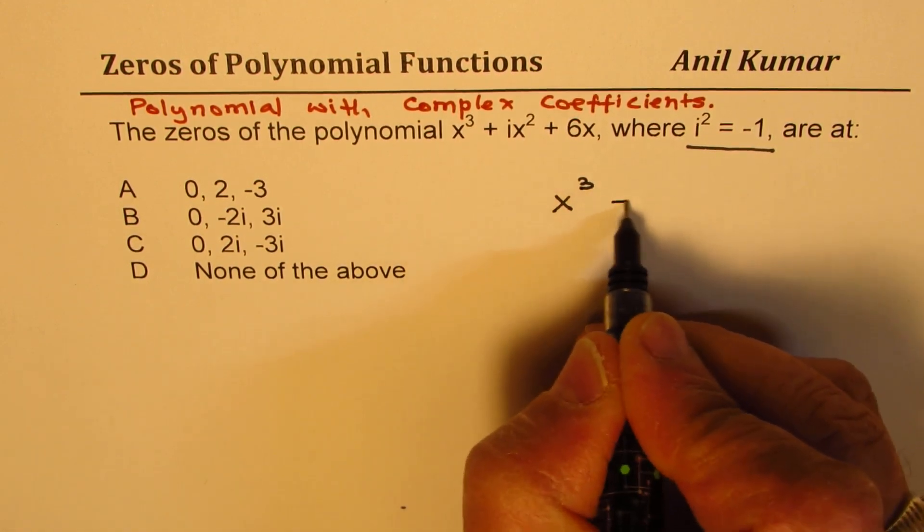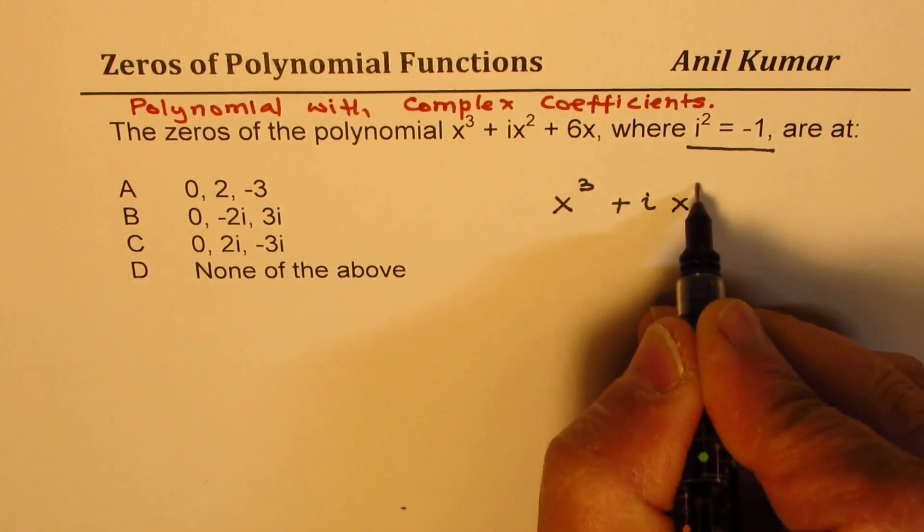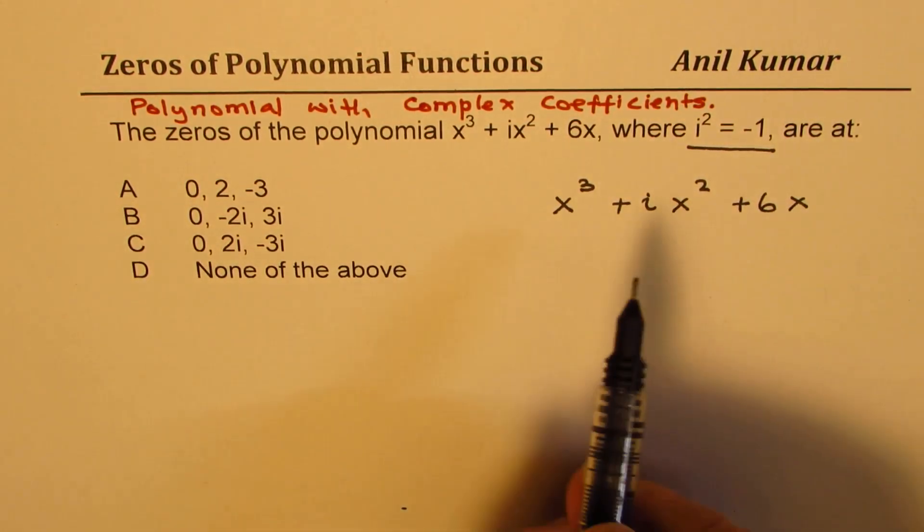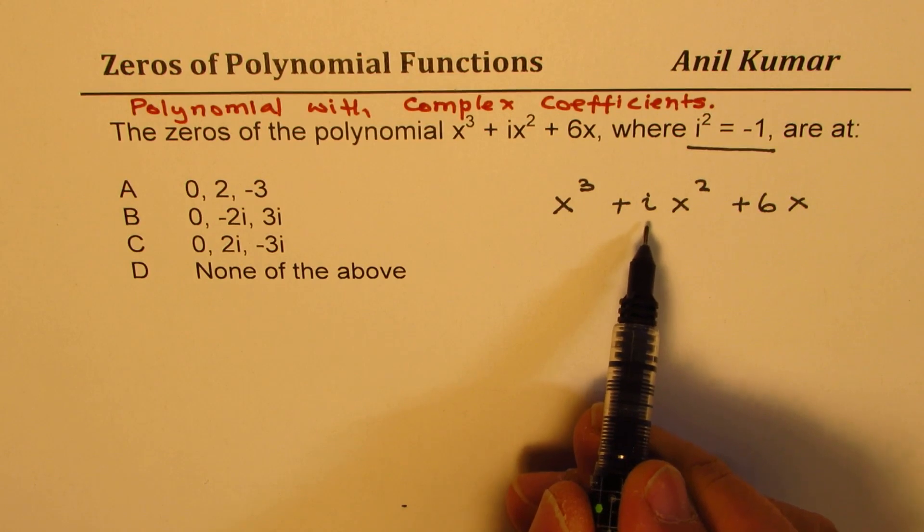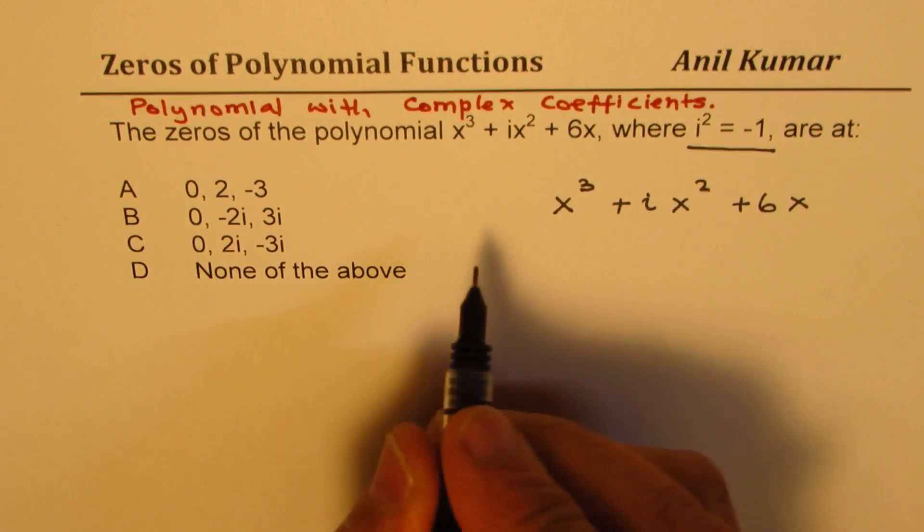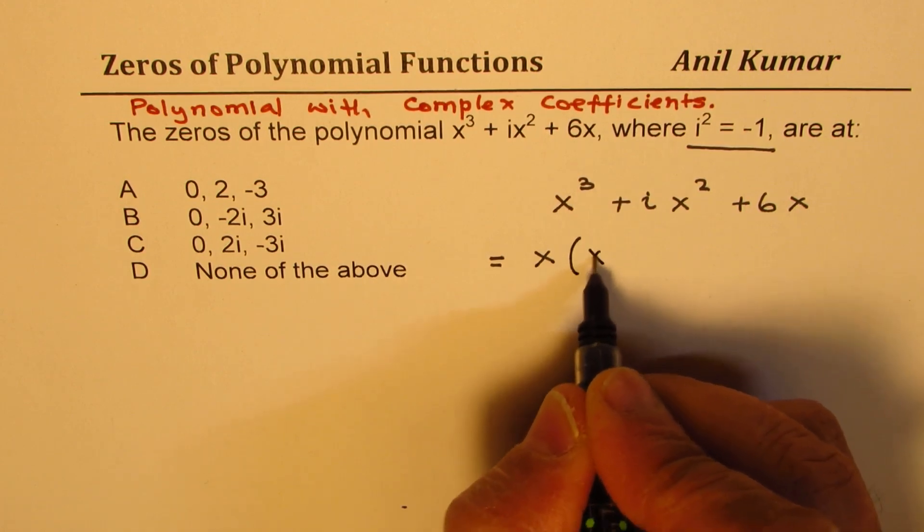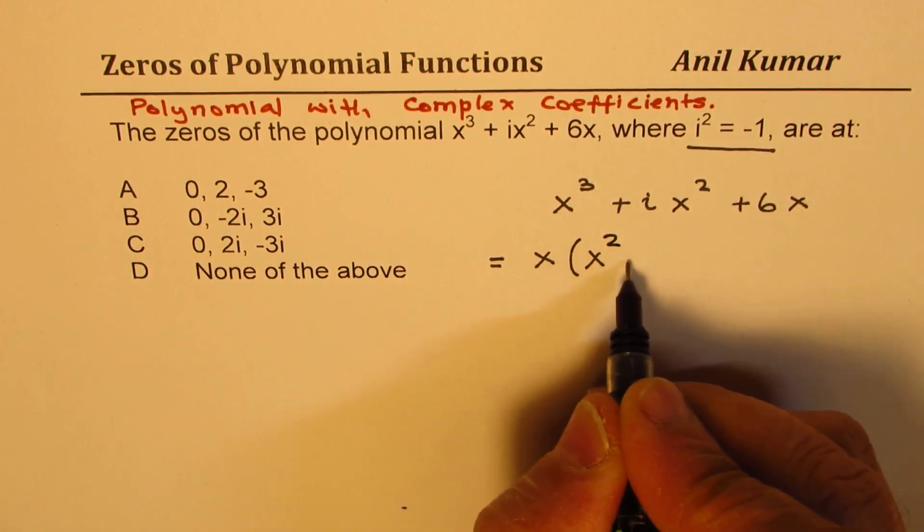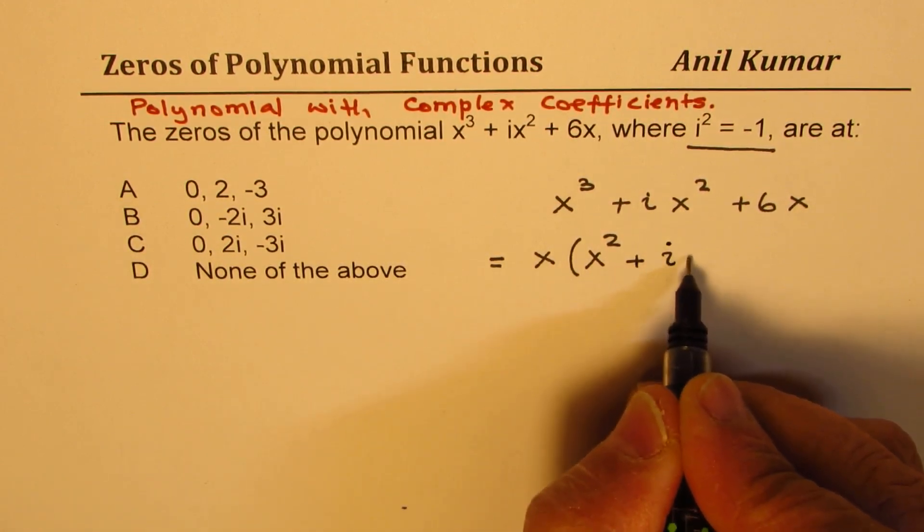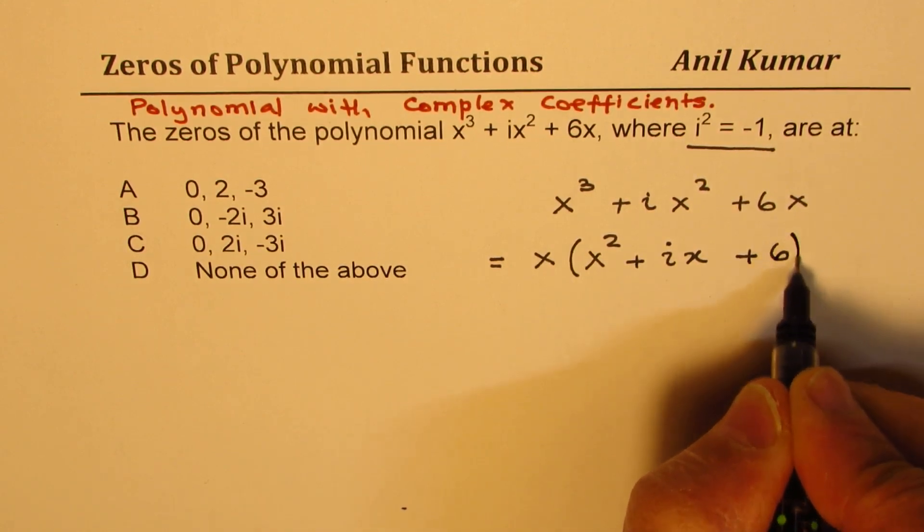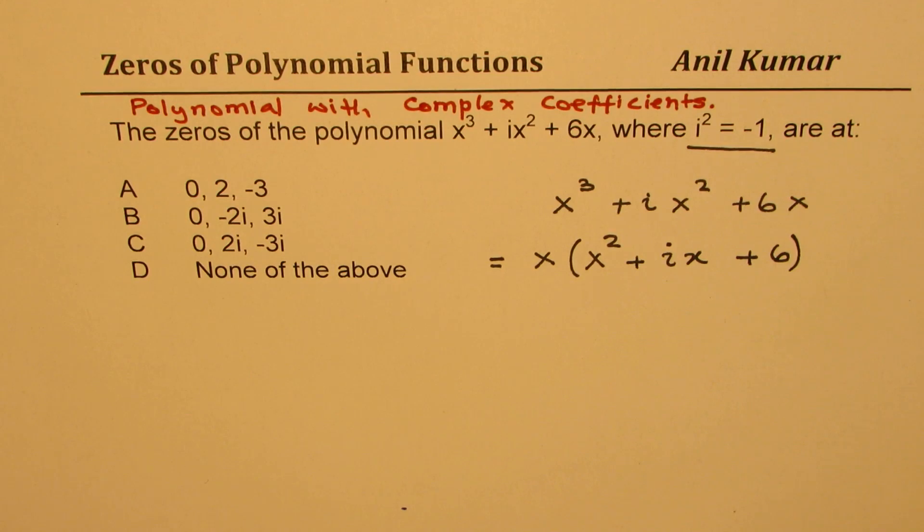So we are given x³ + ix² + 6x as our polynomial with complex coefficient i. Now we could actually factor x, so we get a quadratic trinomial: x² + ix + 6.